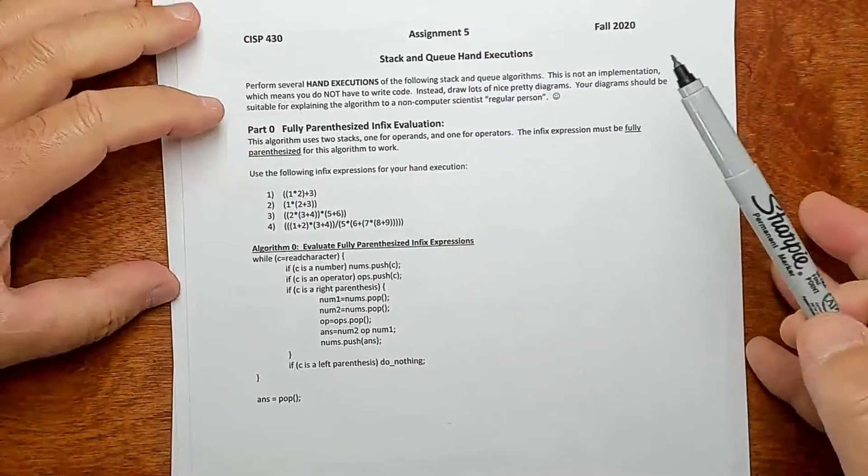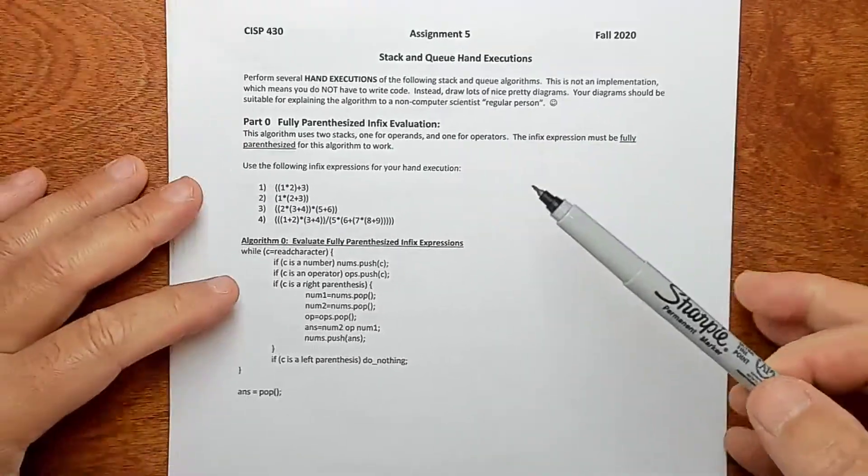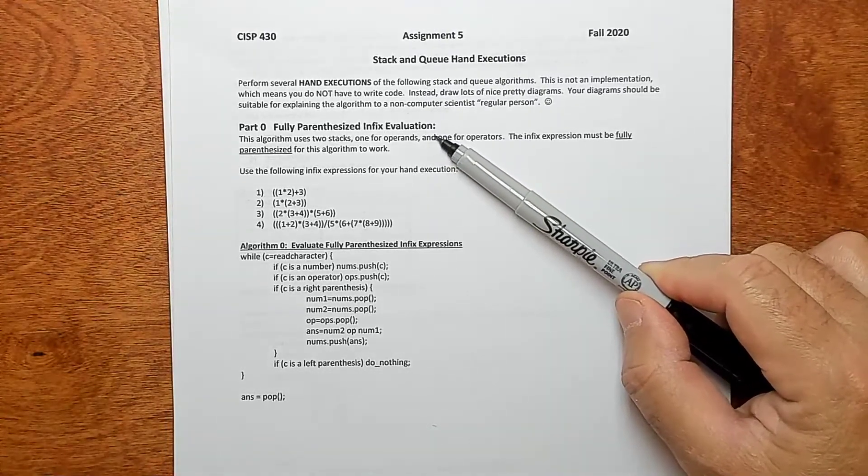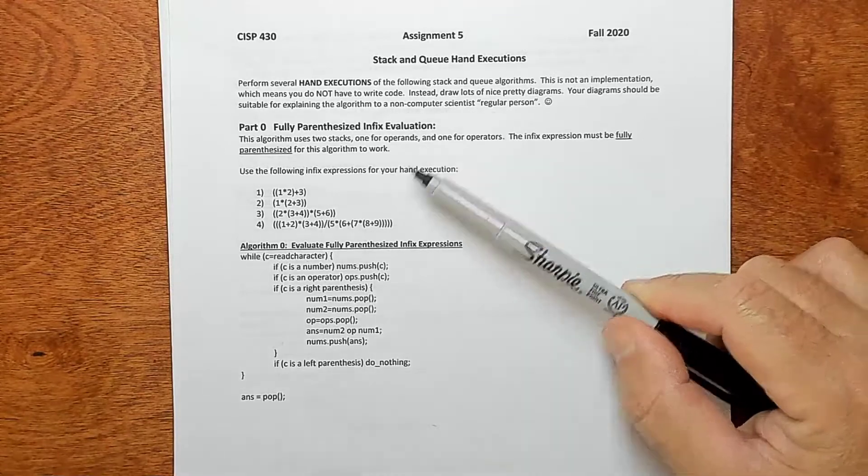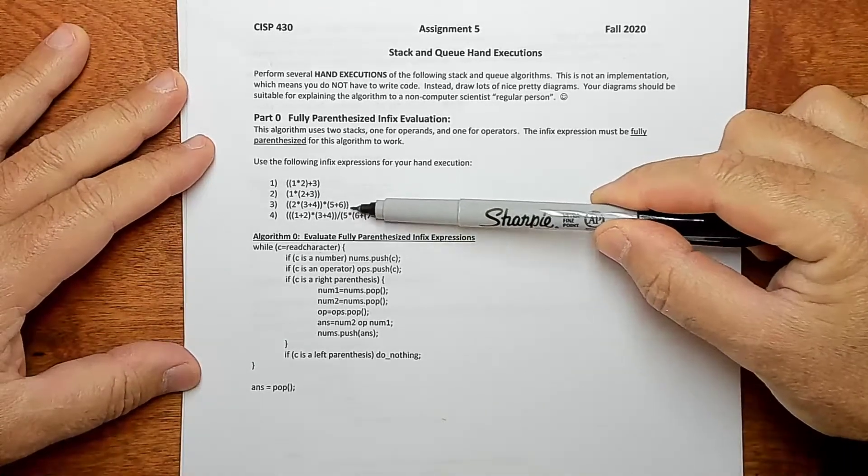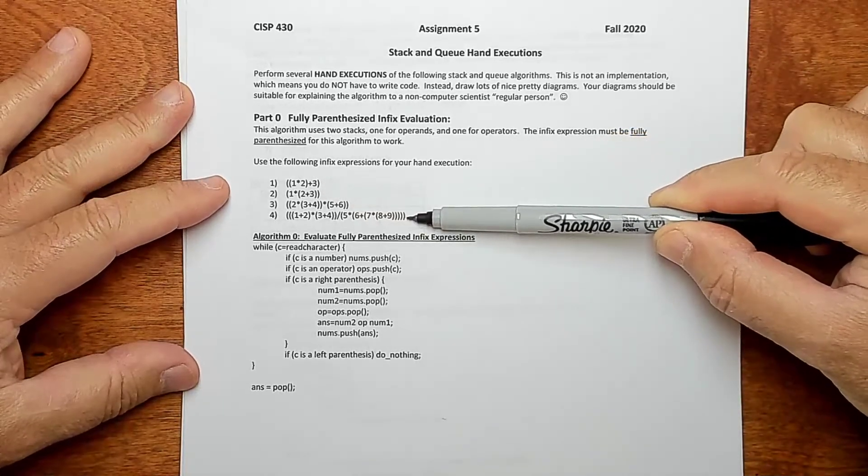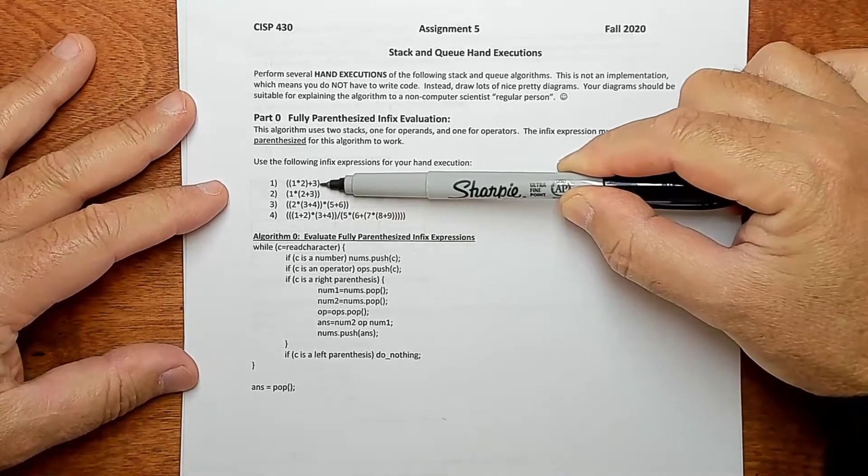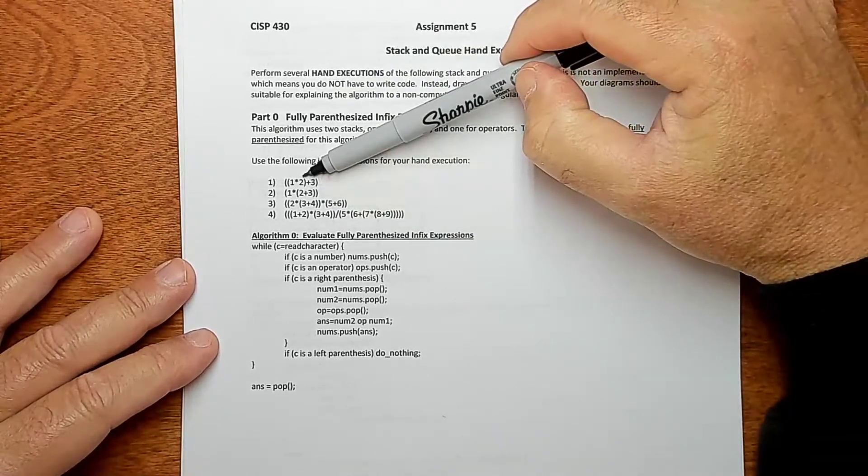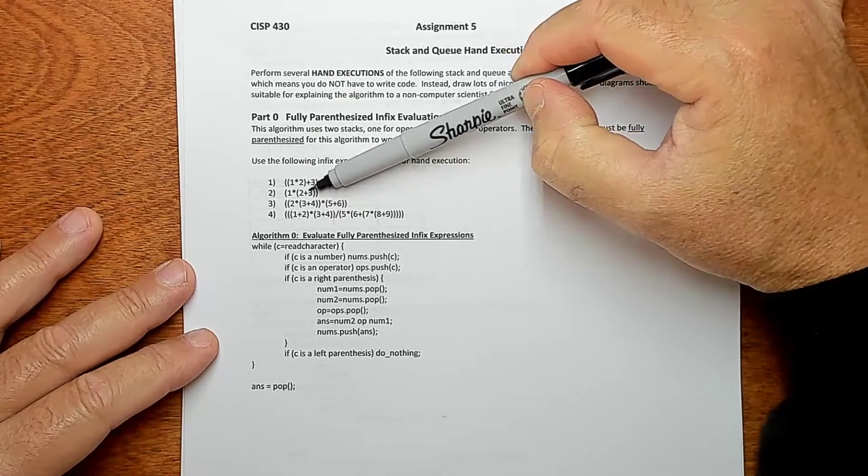So this guy here will fully parenthesize or works on a fully parenthesized infix expression and it just evaluates them. So this is a couple of infix expressions, you know, 1 times 2 plus 3 and blah blah blah, all these guys. It just figures out the answer. So the answer to this first one's going to be 2 times 1 is 2 plus 3.